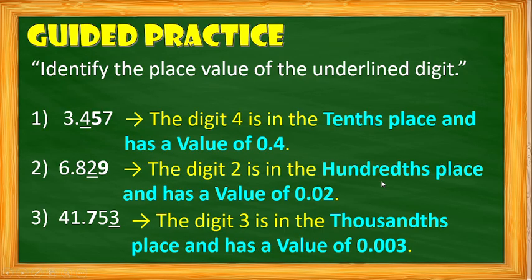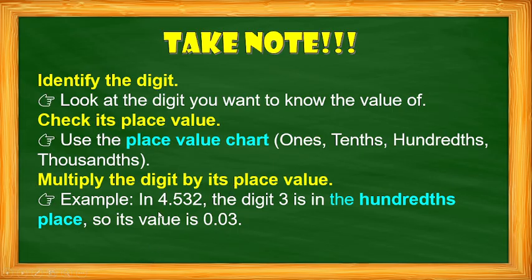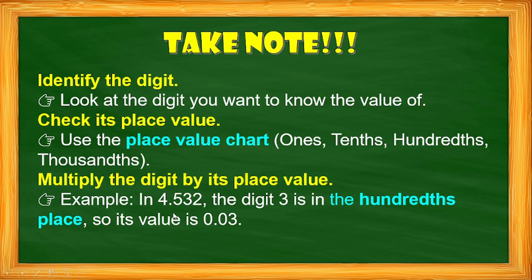I hope you already know how to identify the place value and also the value of the given digit. To identify the value: first, identify the digit you want to know the value of. Then check its place value and use the place value chart — whether it's ones, tenths, hundredths, or thousandths. Then multiply the digit by its place value. For example, in 4.532 thousandths, digit 3 is in the hundredths place, so 0.1 × 3 = 0.03.